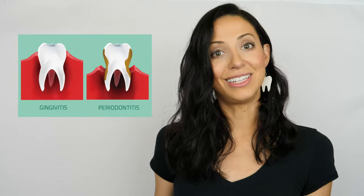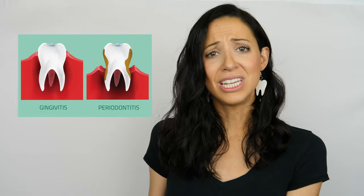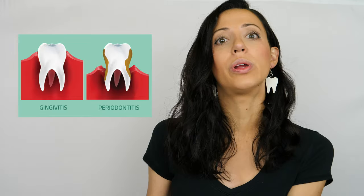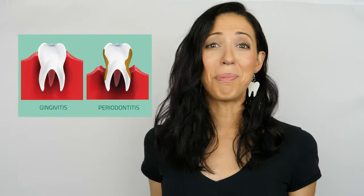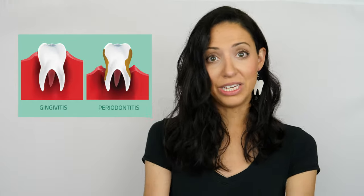However, if gingivitis progresses on to periodontitis, that cannot be reversed and may even require surgery or some kind of gum procedure. At minimum, if there's buildup below your gum line, you will need a deep cleaning, also known as scaling and root planing, as well as more frequent re-care appointments throughout the year. With periodontitis, those tissues start to pull away from your tooth and create pockets underneath your gums, and the bone underneath your gums starts shrinking away, which can lead to bone loss.